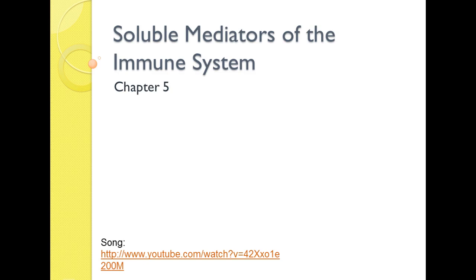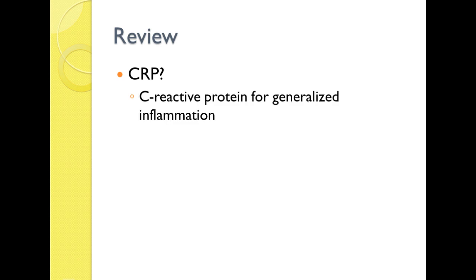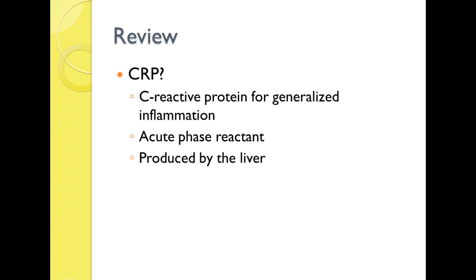We've talked about the complement system a couple times in the last few weeks. I haven't gotten into any detail on it yet, but here's where we get to memorize the fun cascade called complement. First, a little review. CRP is C-reactive protein. It is increased in generalized inflammation — whether you get in a bad car accident, have a heart attack, or hit your knee on the wall. You're going to have some C-reactive protein released. It is not specific and not a good indicator to use to diagnose somebody, but it is good for monitoring inflammation to see if it has decreased over a period of treatment. It is produced by the liver — we call it an acute phase reactant.